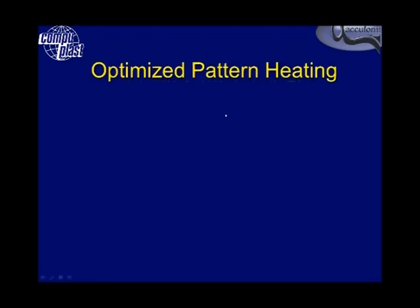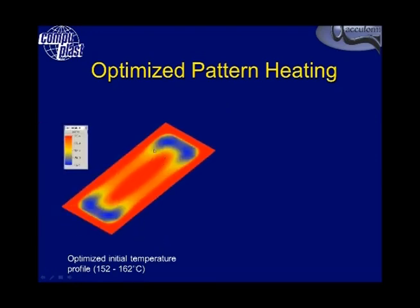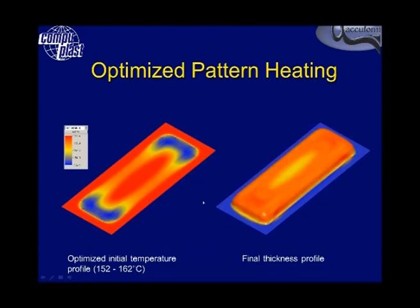In this case, the solution was pattern heating. TCM has the ability to determine the optimum temperature distribution required through the part. The user specifies a temperature range their heating system can accommodate and can apply heat shields or program zone heaters. Because colder material won't stretch as much as surrounding material, the result is a much more even thickness distribution throughout the part.